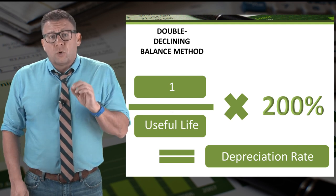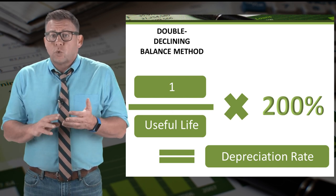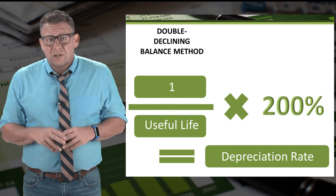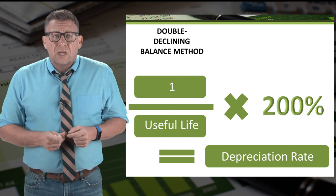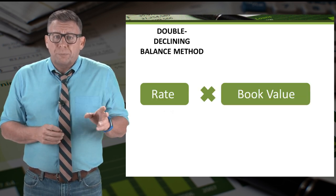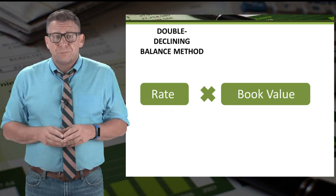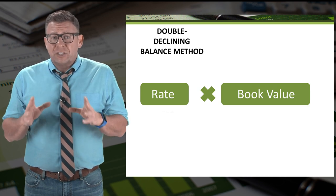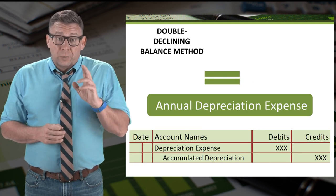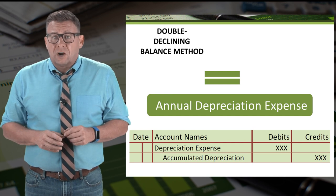The formula for the double declining balance method is quite different from the other methods. It is 1 divided by the useful life in years, times 200% (or 2), which gives us our depreciation expense rate. We then multiply the depreciation rate times the book value of the asset. Notice that we do not deduct residual value anywhere in this formula. The result equals the amount of annual depreciation expense recorded in our adjusting journal entry.